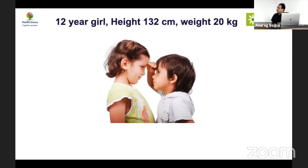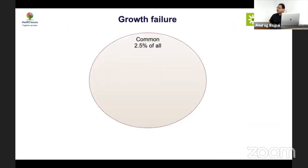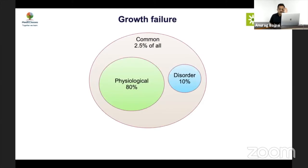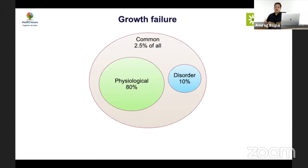Consider a 12-year-old girl with height 122 cm and weight 20 kg. The key questions a pediatrician must answer are: Is she short? Does she require evaluation? What investigations are important and how do we prioritize them? Growth failure is common — 2.5% of all children will be short by statistical definition, 80% of these will be physiological, and 10% will have a pathological cause. The role of the treating physician is to avoid unnecessary workup while not missing pathology, which can range from celiac disease to life-threatening craniopharyngioma.